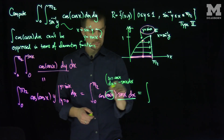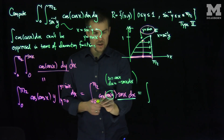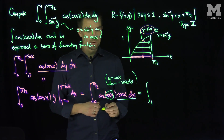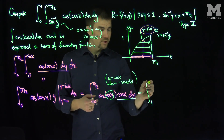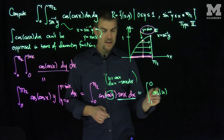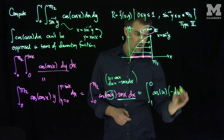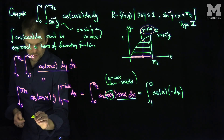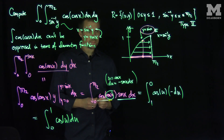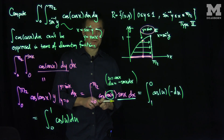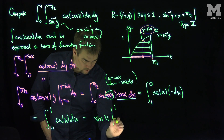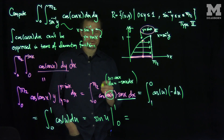Now I can set up a beautiful substitution. Let u equal cosine of x; then du equals negative sine of x dx, and I see that sine of x dx appears right here. When x equals 0, cosine of 0 equals 1, so u equals 1. When x equals pi over 2, cosine equals 0. So the integral becomes the integral of cosine of u times negative du, and using that negative to flip the limits gives the integral from 0 to 1 of cosine of u du.